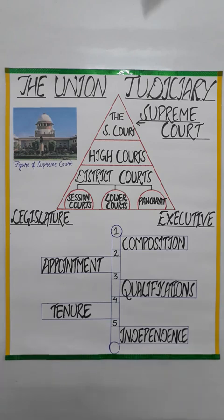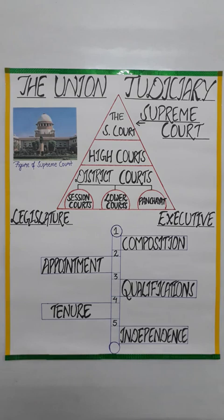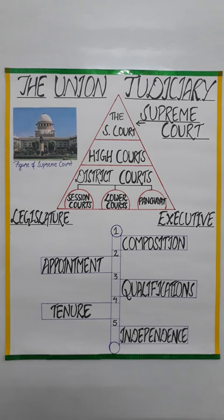Now let's move on to the qualifications of the judges. A person to be appointed as a judge of the Supreme Court must have the following qualifications. Number one, he or she must be a citizen of India — foreigners or persons belonging to the Anglo-Indian community cannot be qualified as judges of the Supreme Court. Number two, he or she should have worked as a judge of the High Court for at least five years. Number three, he or she should have been an advocate of a High Court for a period of ten years. The qualification is either having served as a judge of a High Court for five years, or having been an advocate of a High Court for ten years. Additionally, the person should be, in the opinion of the President, a distinguished jurist.